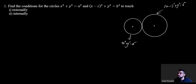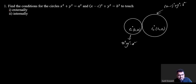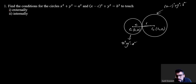For any circle, we identify its center and radius. Let me denote the center of the first circle as C1 and the center of the second circle as C2. The radius of the first circle is r1 and the radius of the second circle is r2.